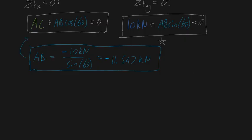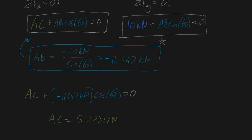Once we substitute that value back in here, we're left with AC plus AB, which we just calculated was minus 11.547 kilonewtons times cosine 60, equal to zero. Once we solve for this, we get AC onto one side of the equation, meaning AC must equal this times cosine 60, which is positive 5.7735 kilonewtons.